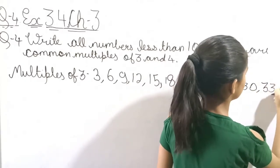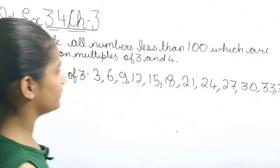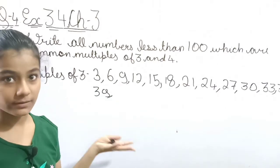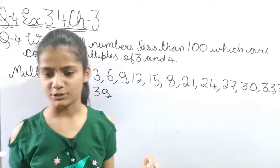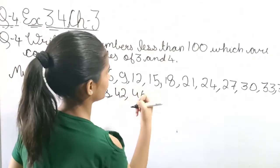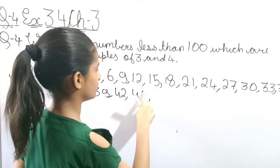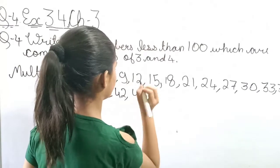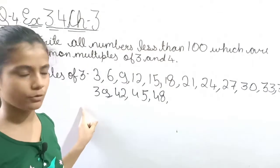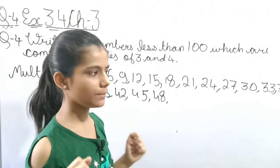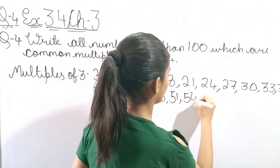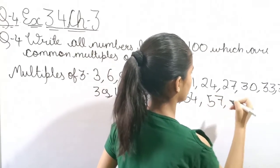3 elevens are 33, 3 twelves are 36, then 39, 42, 45, 48. I have to write the table as well. Then 51, 54, 57, 60.